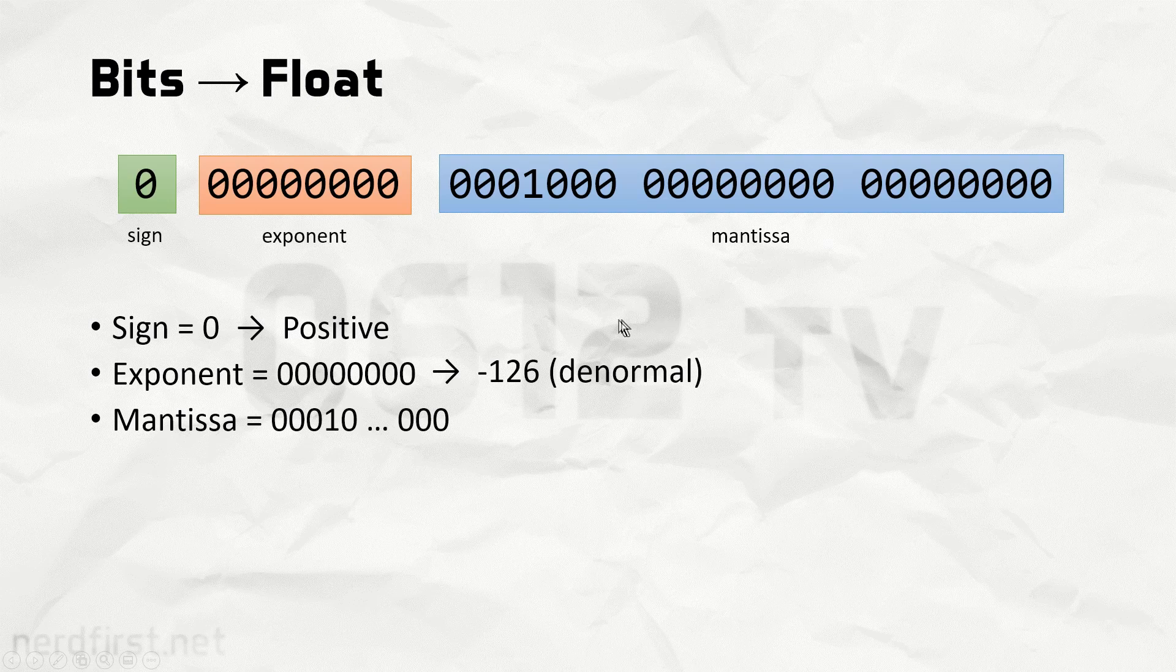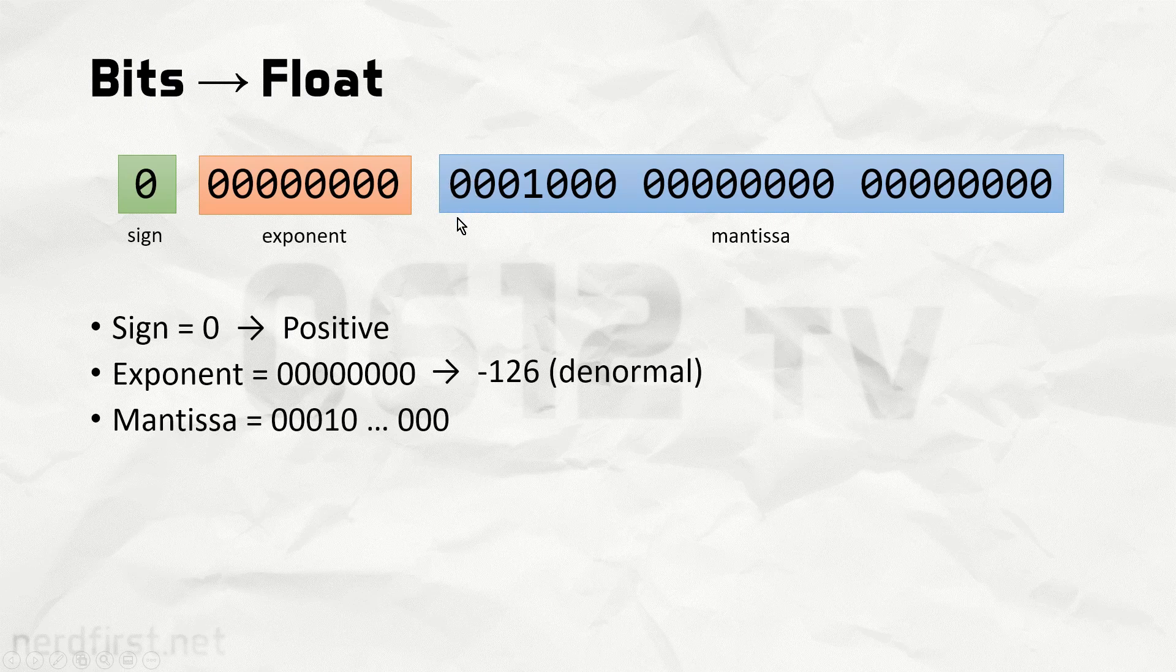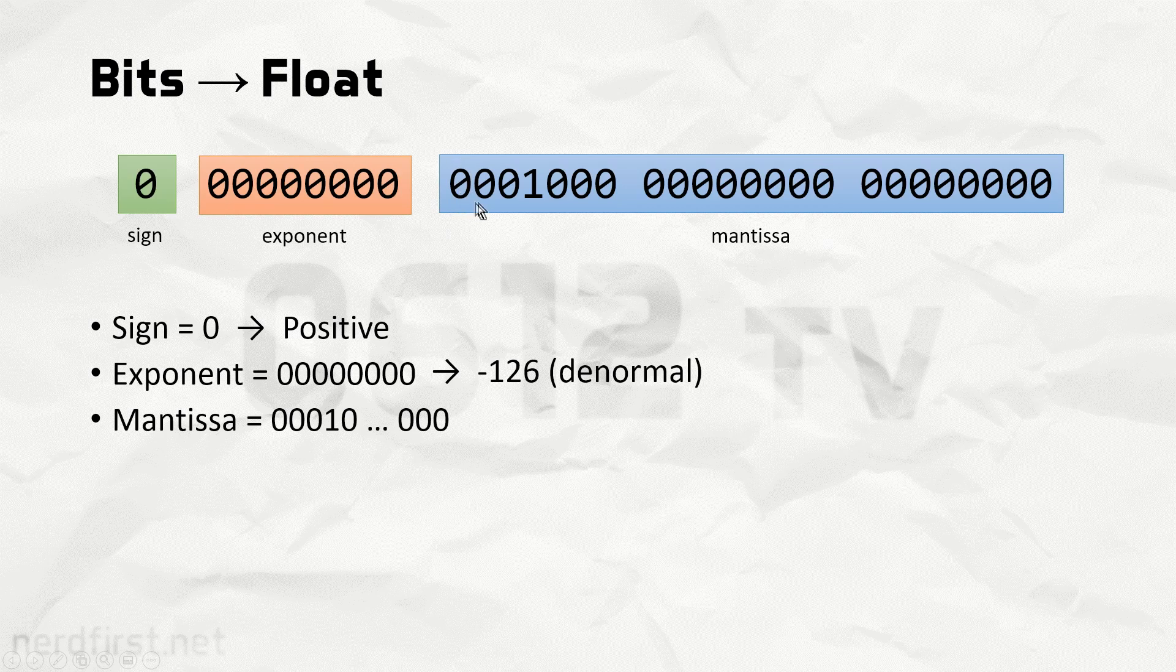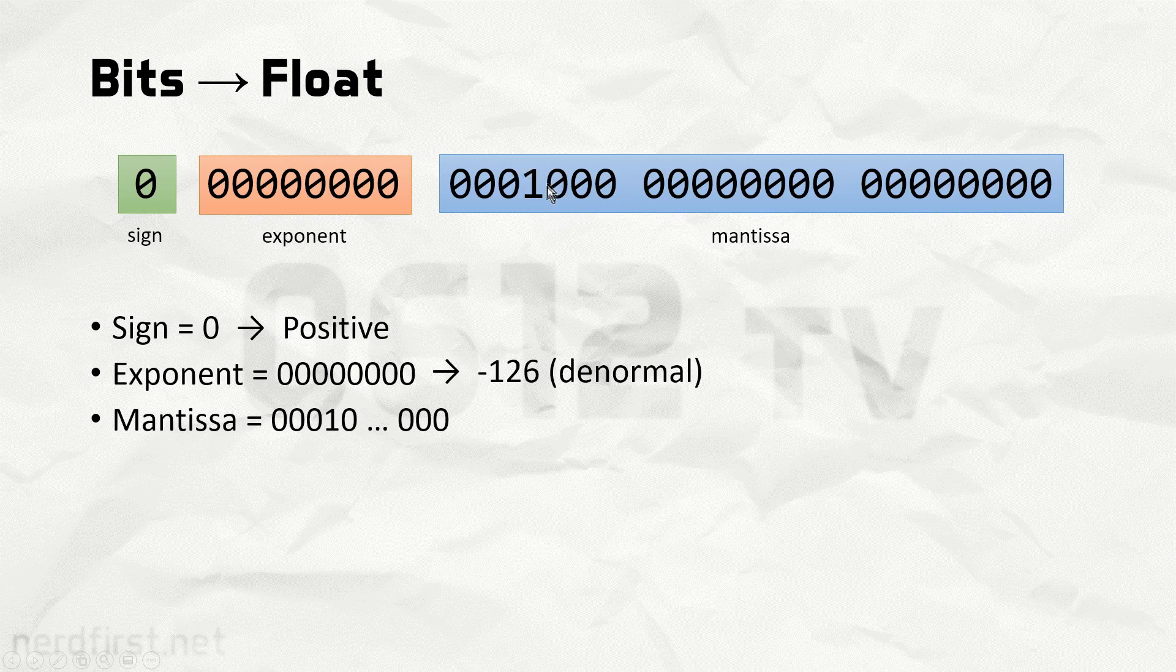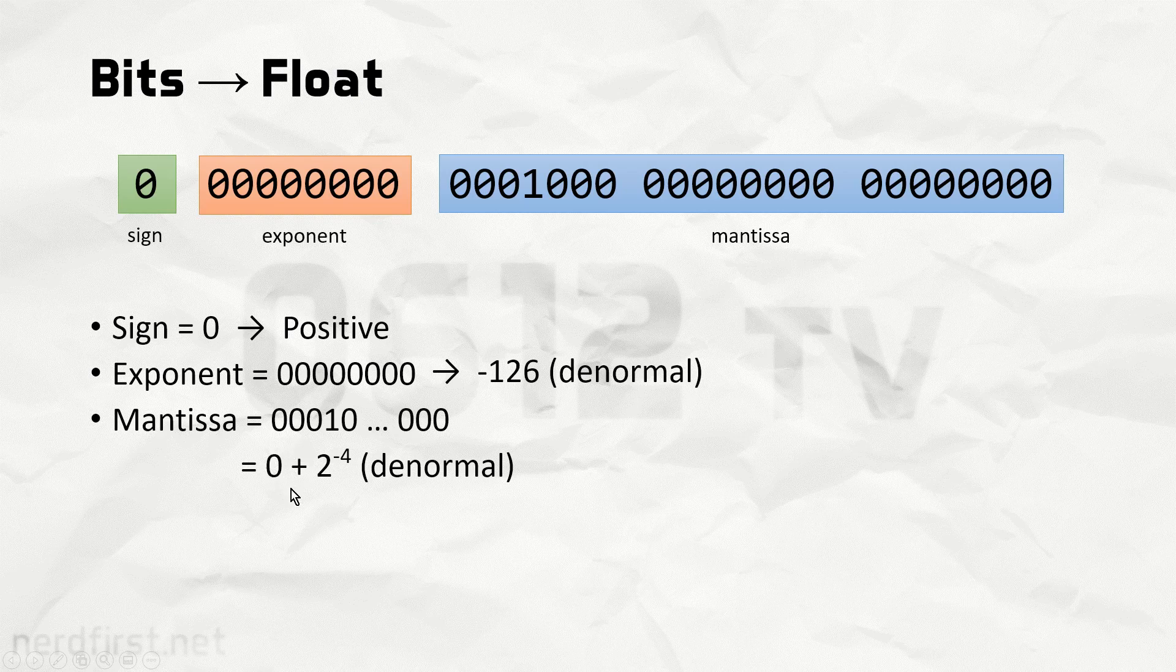Of course how we read off the mantissa is we have to figure out the different powers of 2. So the most significant bit here will be 2 to the power of negative 1, and we move on towards the right, so to the power of negative 1, negative 2, negative 3, negative 4. Of course we can visually see that there are no other ones. So all there is here is 2 to the power of negative 4. Now typically we would say 1 plus 2 to the power of negative 4, but in this particular case, because we know it is a denormal number, we would not do the 1 plus step. It would just be 2 to the power of negative 4.